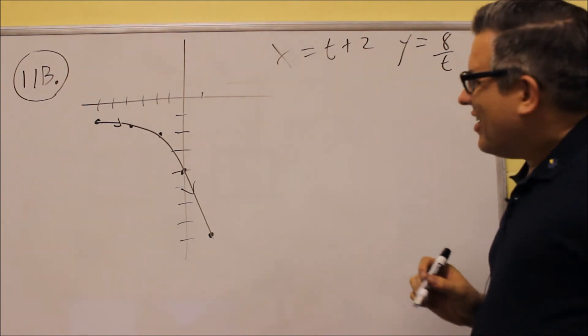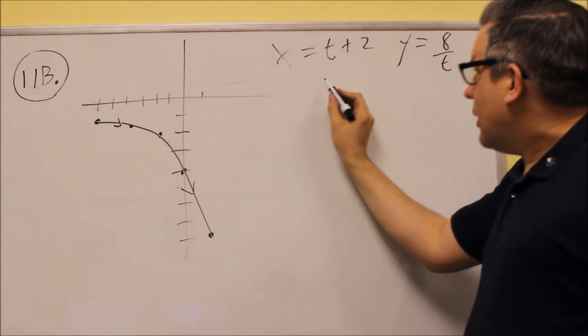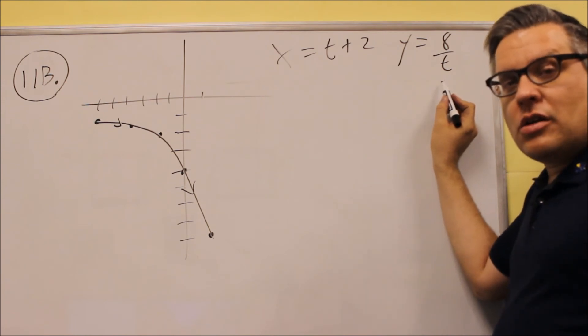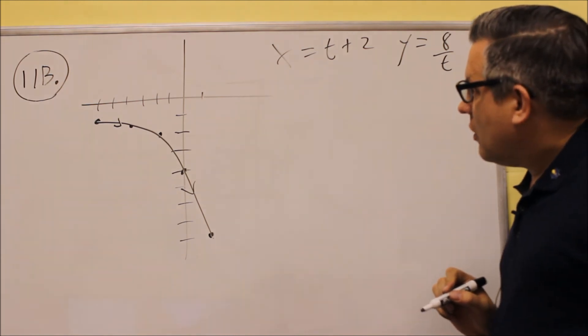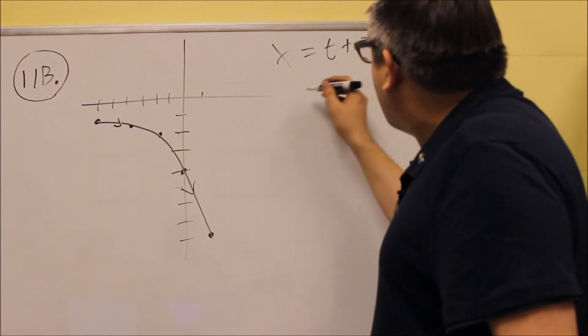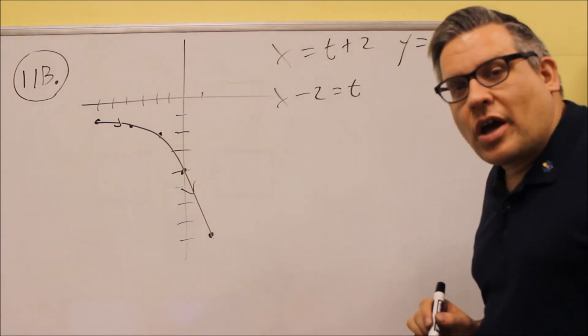What we want to do is we're going to take this equation, we're going to solve for t and then we're going to put it in this equation and eliminate the parameter or eliminate the t and leave our answer in terms of y equals. So for this one, if we solve for t, we get subtract the 2 and we get t is equal to x minus 2.